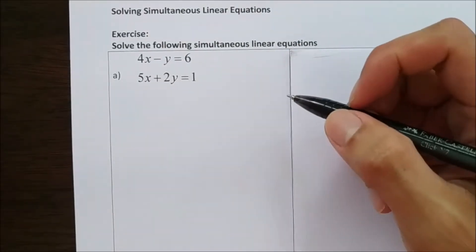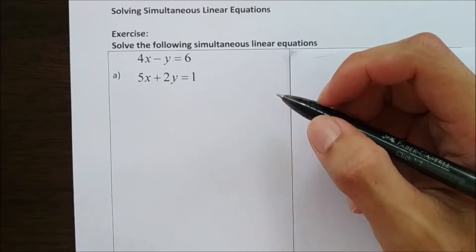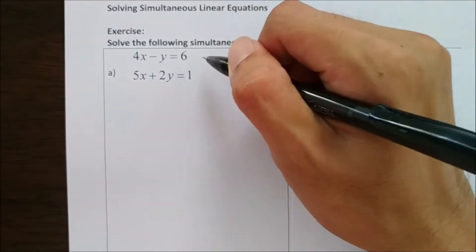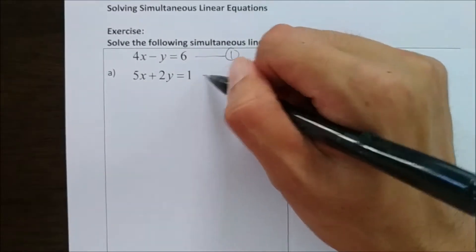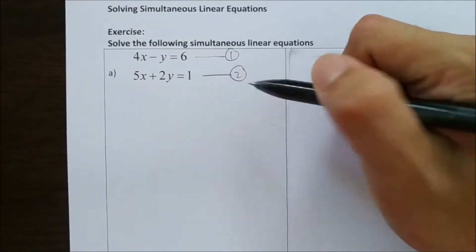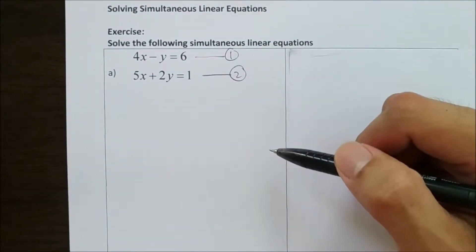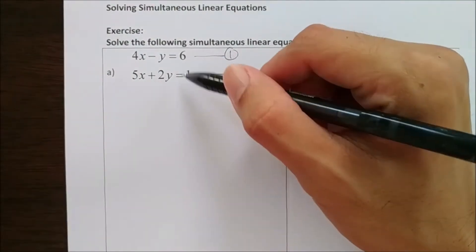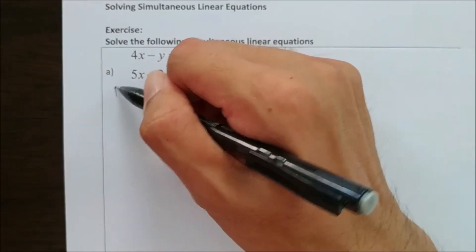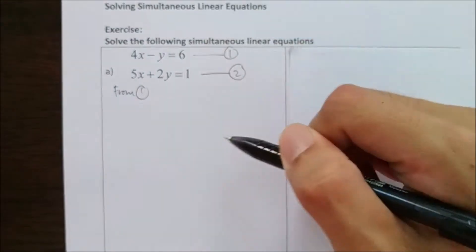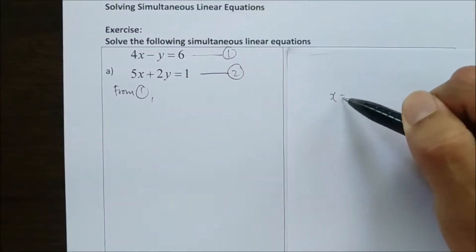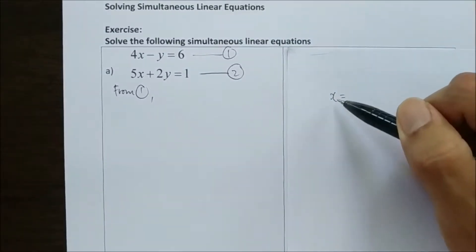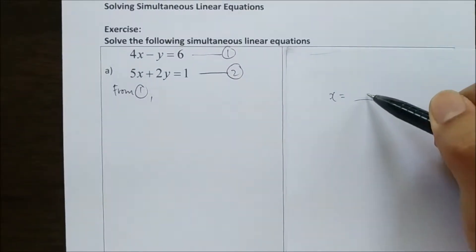In order to solve this simultaneous linear equation, the first thing we do is we need to label. We label the equations — I label this as number 1, and this as number 2. It doesn't matter which one is number 1 or number 2. I take one of the equations, let's say from equation number 1. I'll try to form either x as a subject — so x equals to something with a y.